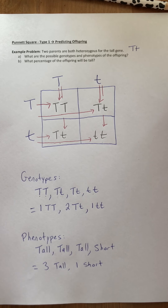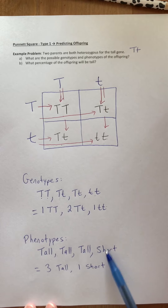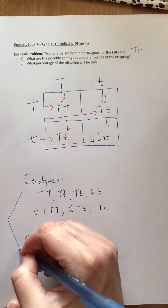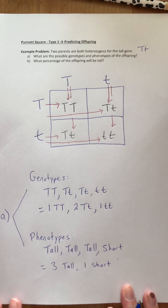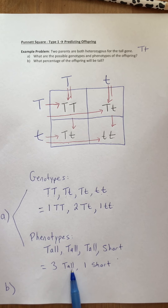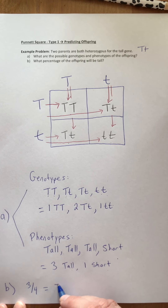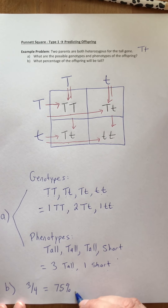The last thing is to answer the questions. Question A asks for the possible genotypes and phenotypes — we just worked those out. For question B, what percentage of the offspring will be tall? From our phenotypes we can see three out of four are tall and one out of four is short. So our answer is three out of four, which converts to 75%. That's how you go through the example problem.